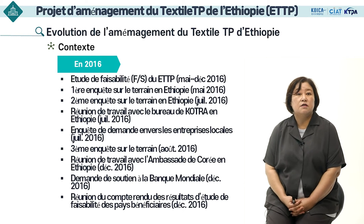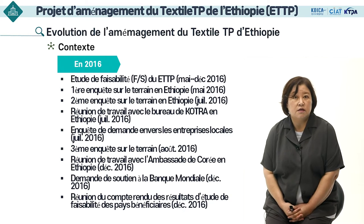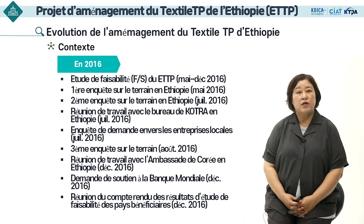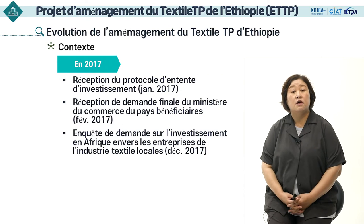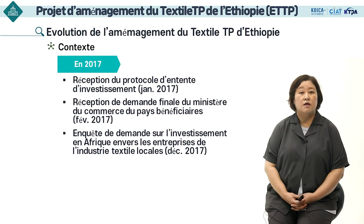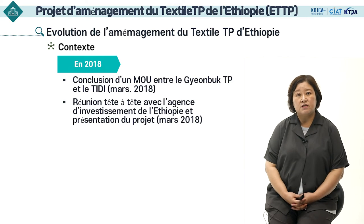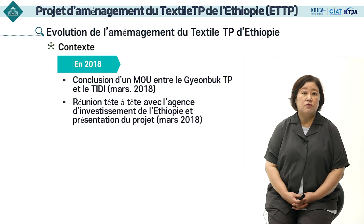Nous avons mené des enquêtes sur le terrain au cours de plusieurs tournées et une enquête à grande échelle a été menée pour les entreprises locales en Éthiopie. À travers diverses enquêtes, il y a eu un rapport final sur l'étude de faisabilité en décembre 2016. Le gouvernement éthiopien a officiellement fait la demande finale auprès du gouvernement coréen en février 2017. En reconnaissance de la validité de ce projet, le projet textile technoparc de l'Éthiopie a donc démarré en 2018 et sera mené de 2018 à 2022.